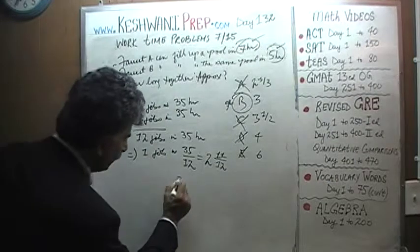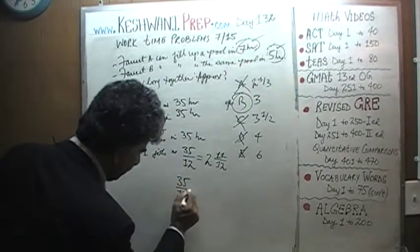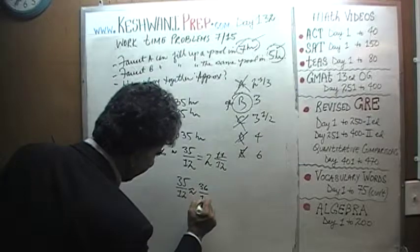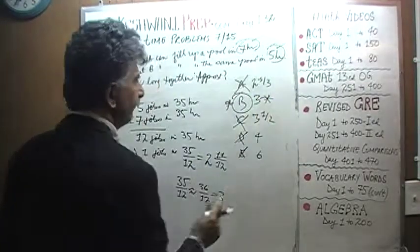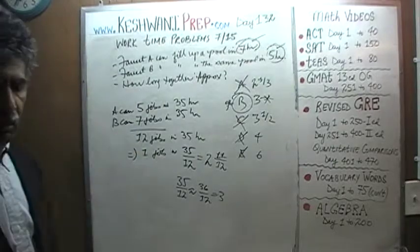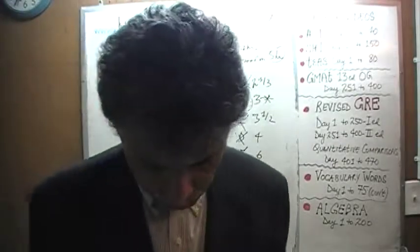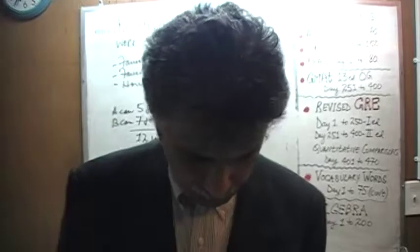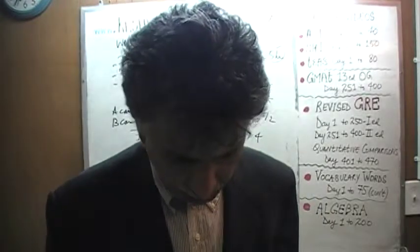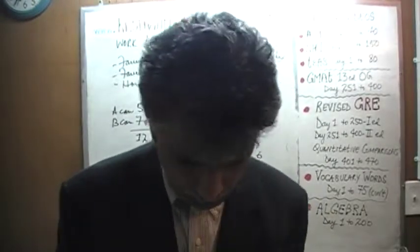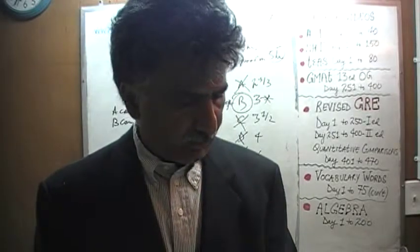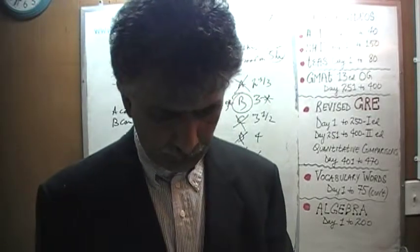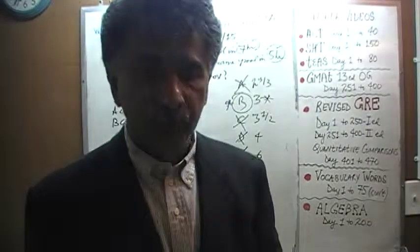Or if you like, 35 over 12 is approximately 36 over 12, and that's 3. Approximately how long it will take them, the answer is 3 hours. It should not take them more than that. It will take them approximately 3 hours to finish the job together, working together. All right, I'll see you tomorrow. Bye now.